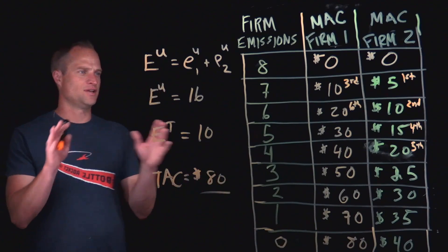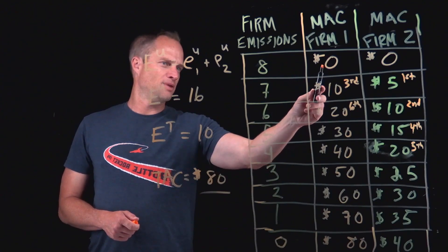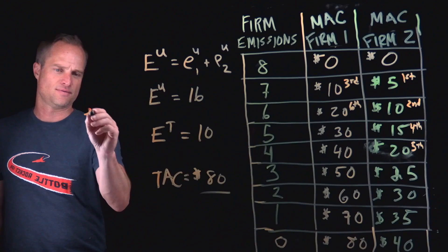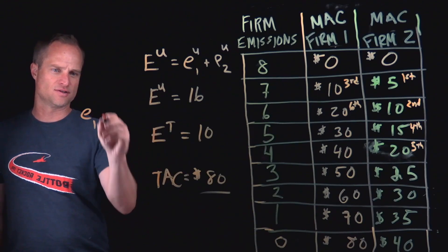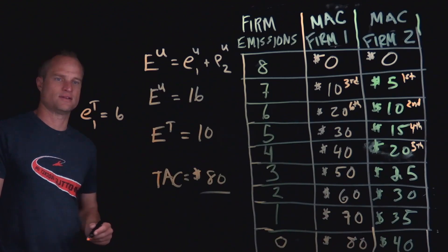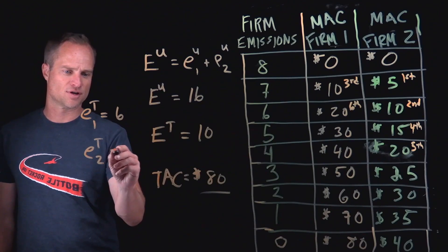All right, but let's examine what each firm is doing. So if firm one abates two units of emissions, then firm one, to meet this target in the cheapest way, would actually be emitting six. So it reduced by two. And firm two, under our emissions target,